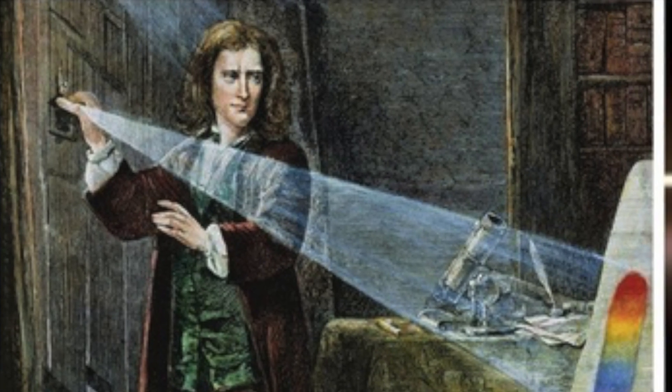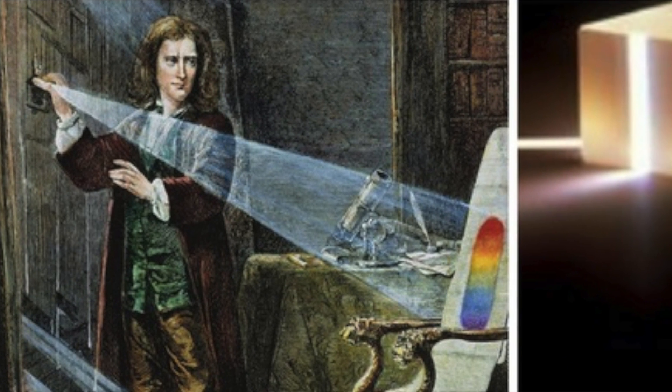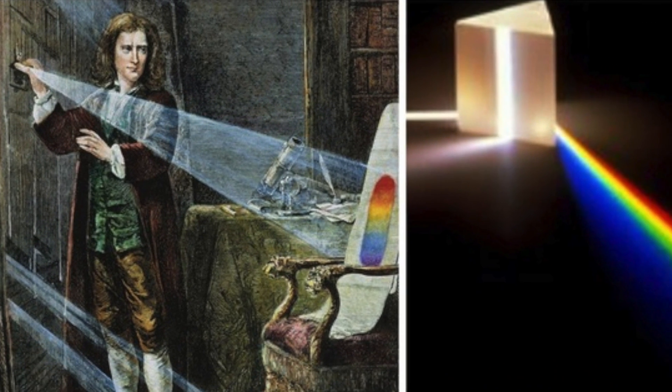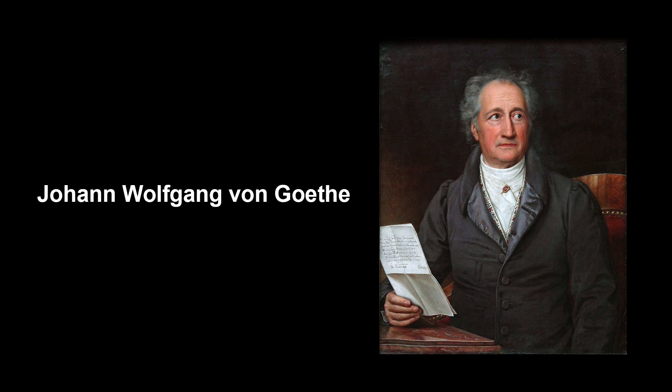Taking a prism, he held it up against the slit on his door and projected the beam onto a piece of white paper. His experiments led to the theory that red, yellow and blue were the primary colors from which all other colors are derived. During this time, most people thought that color was made up of light and darkness, including a German writer, Johann Wolfgang von Goethe. While Newton is credited with the invention of the color wheel, it was Goethe who introduced the concept of associating different colors with emotions.